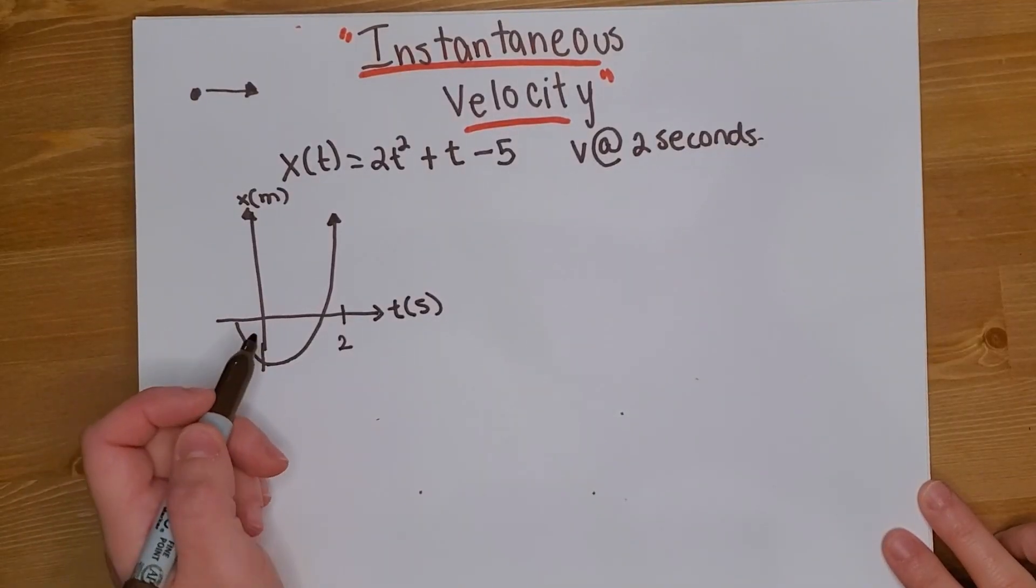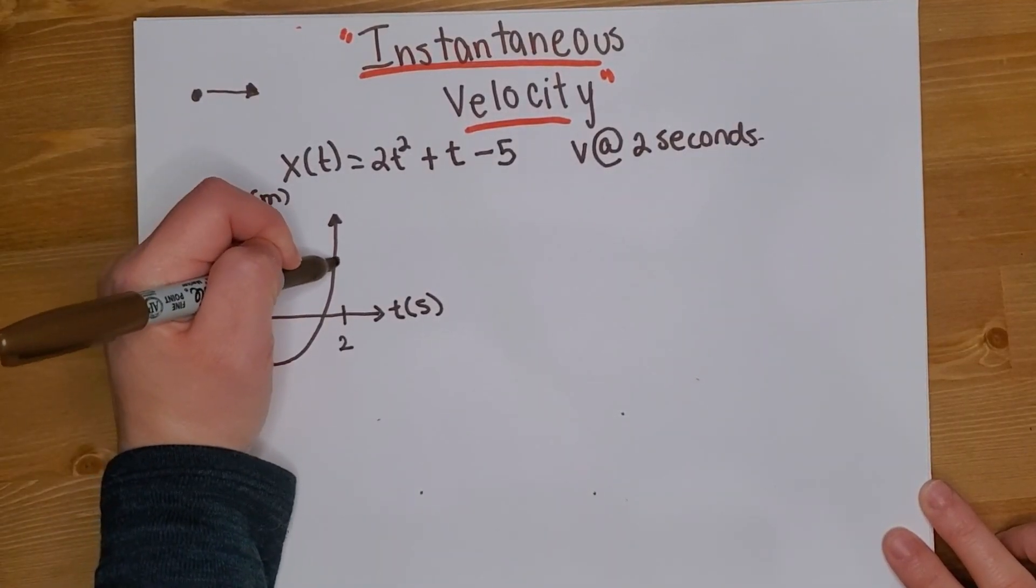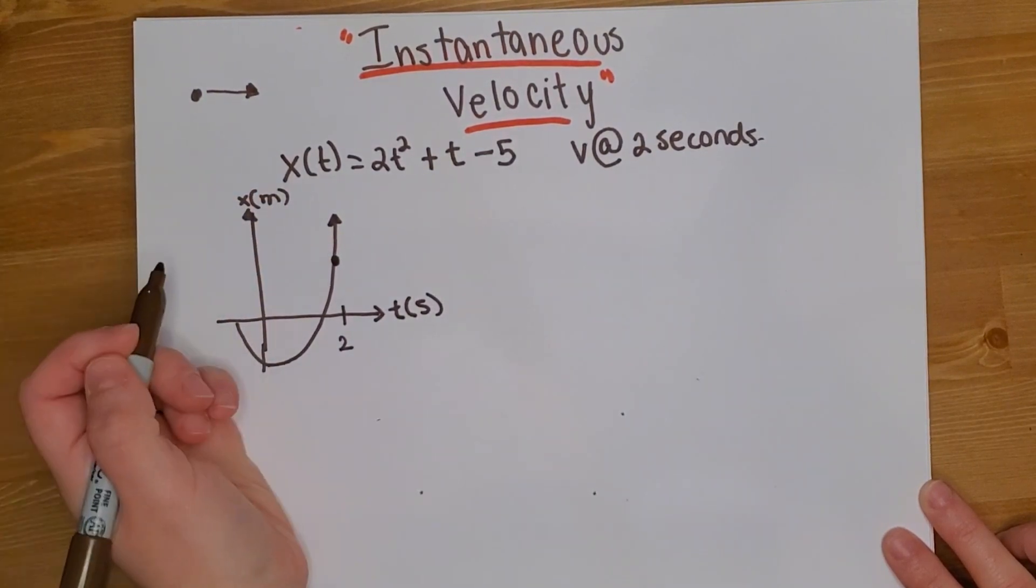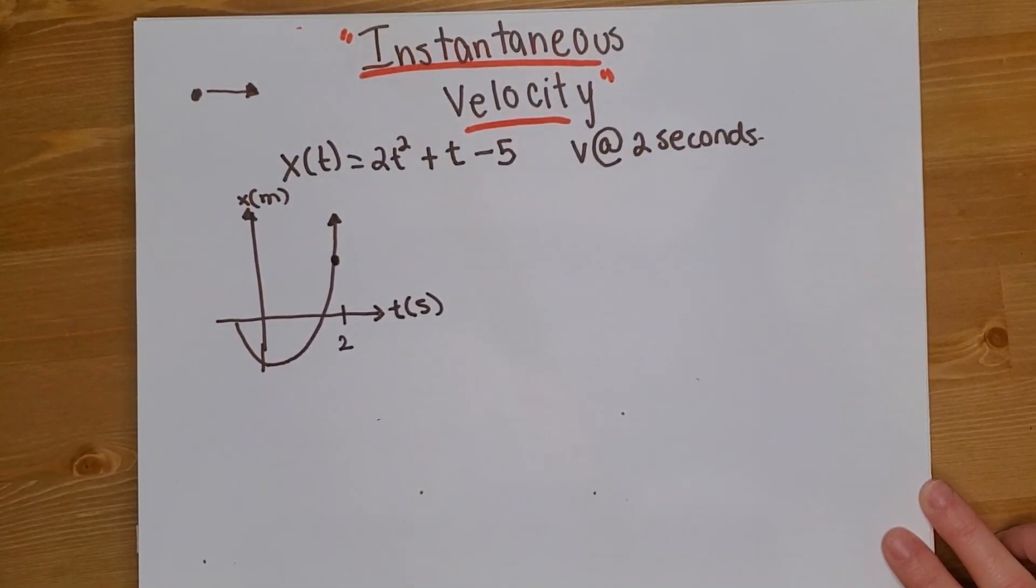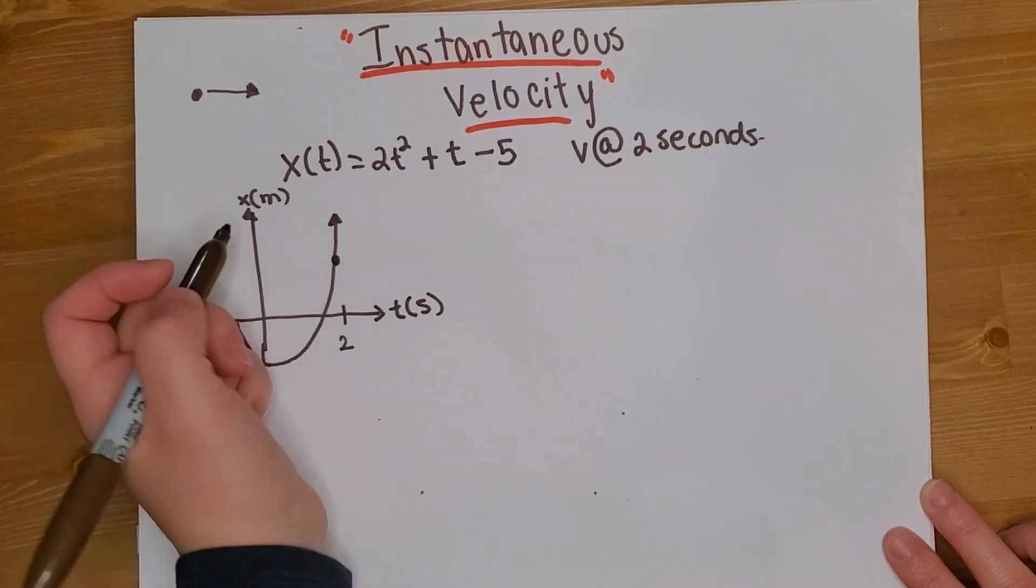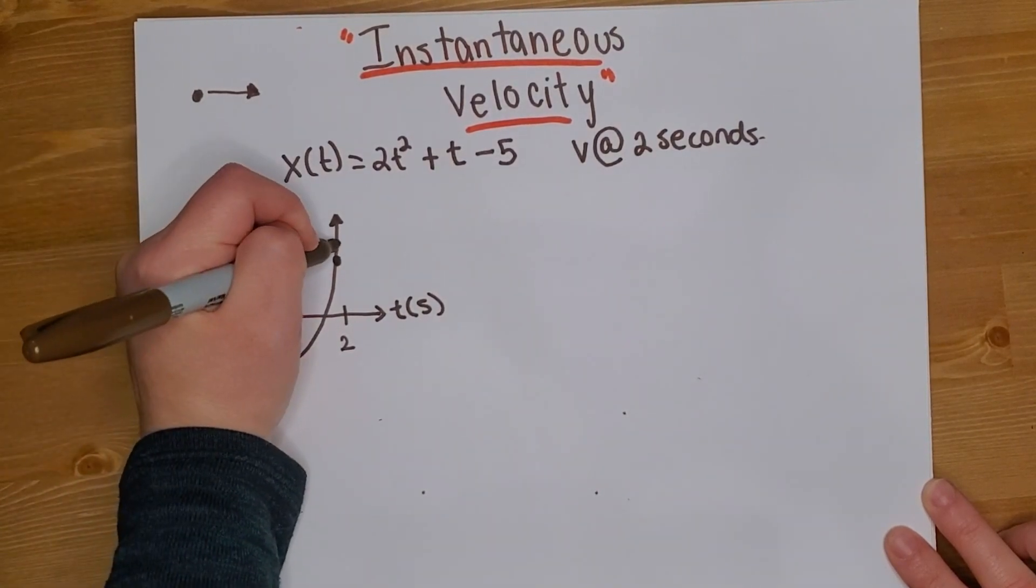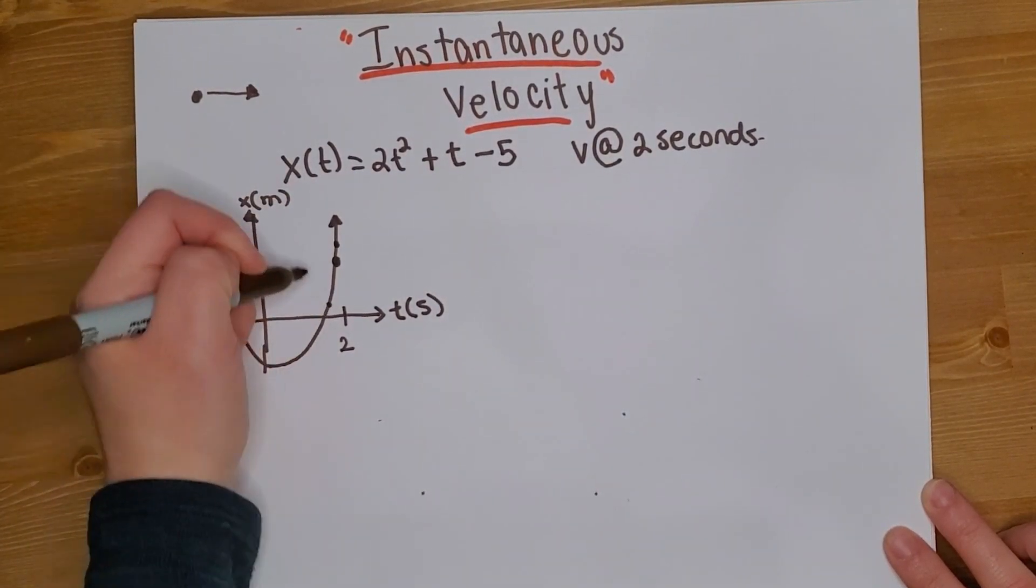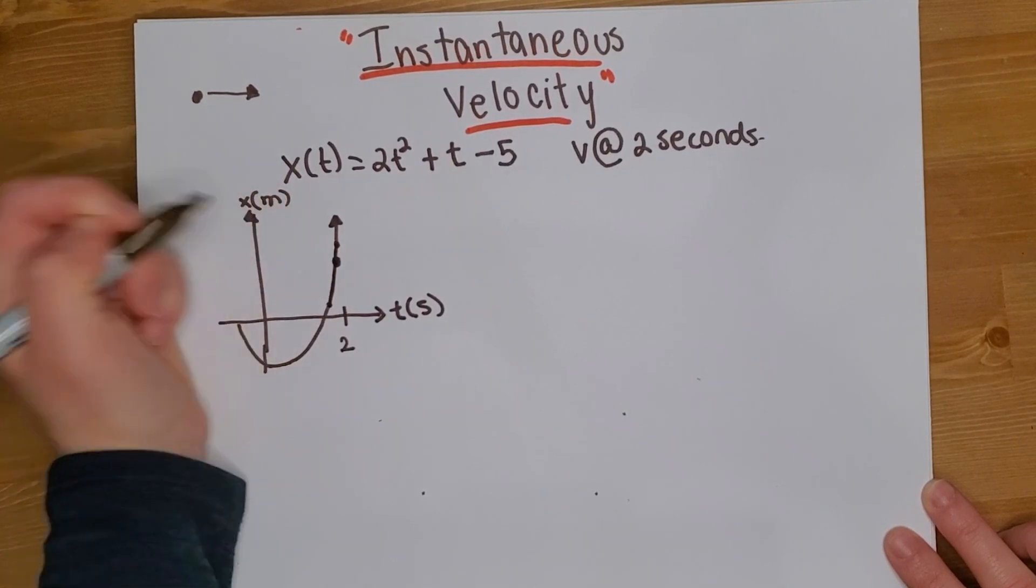Here what I'm trying to do is find the instantaneous velocity right at this point. So how can we find, for example, the average velocity? If we wanted to find the average velocity, we just take two points in time, draw a line, and get the slope.